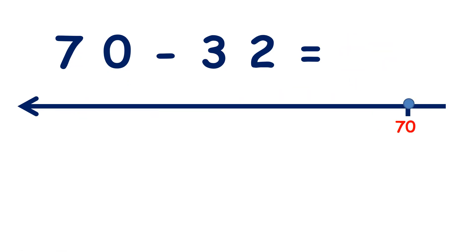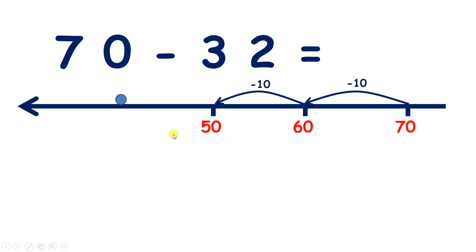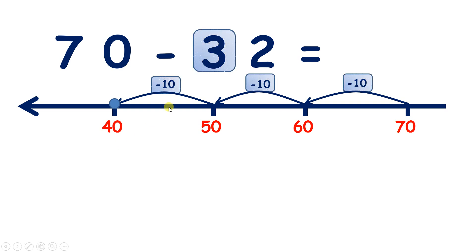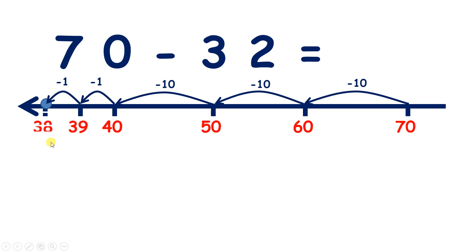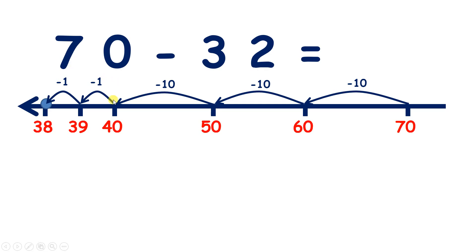Now we have 70 minus 32. Pause the video and see if you can answer this question using a number line. So if we count back three tens, we have 60, 50, 40 — so we've subtracted three tens. Now we can subtract two units. If we count back two from 40, we get 39, 38. So that's our units taken care of. 70 minus 32 equals 38.